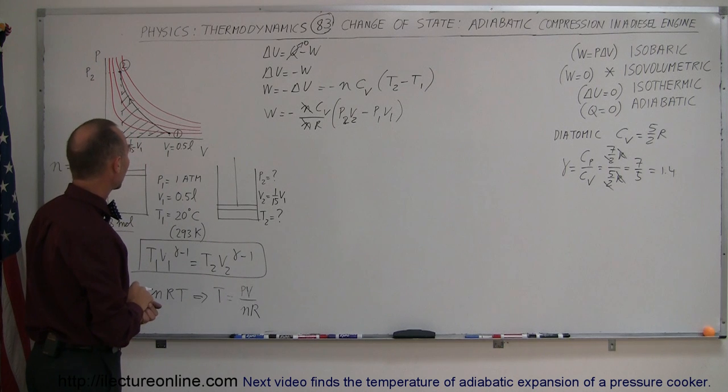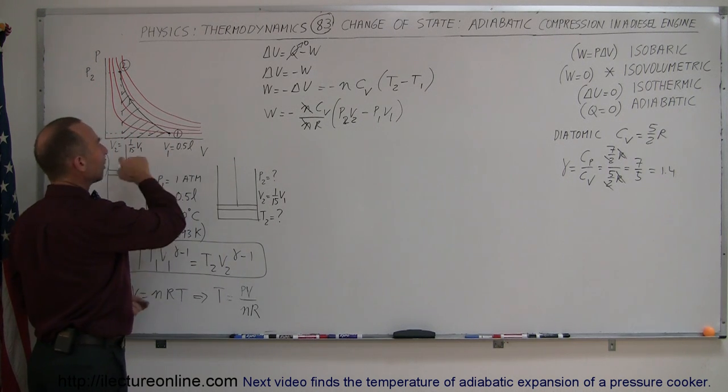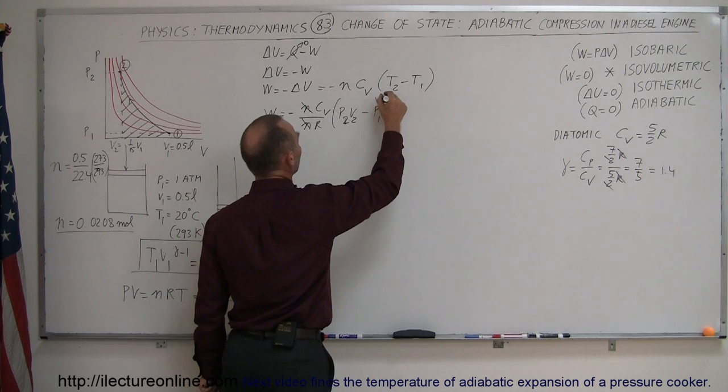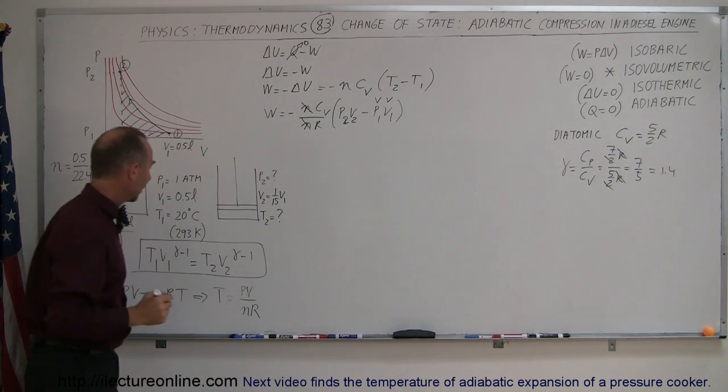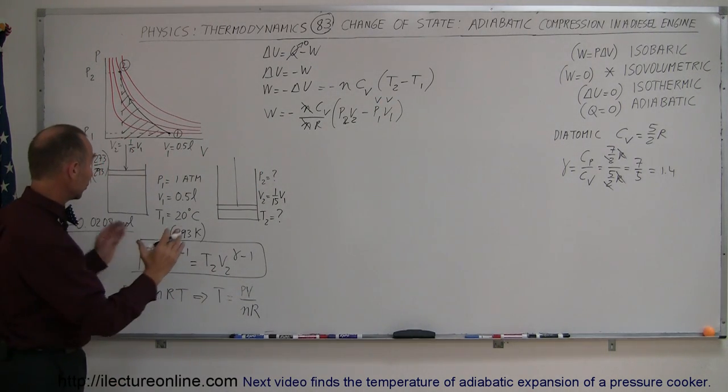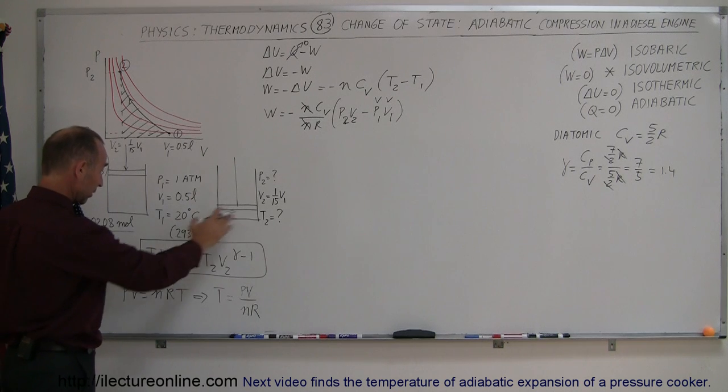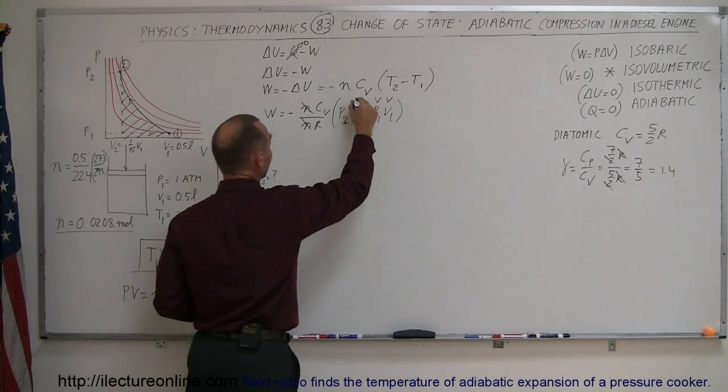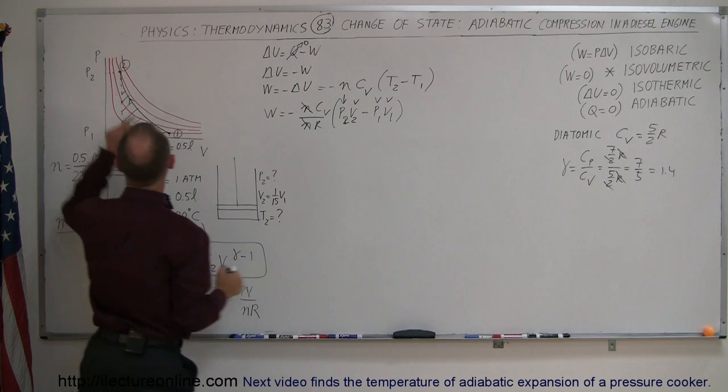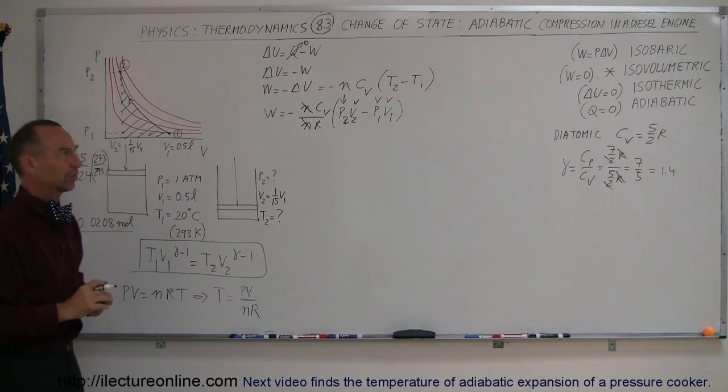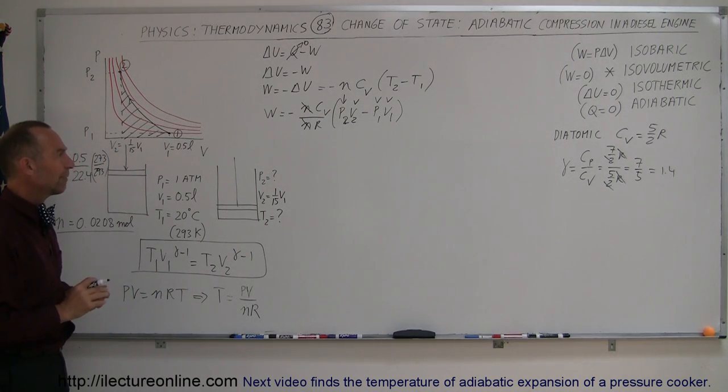We have the original volume and the original pressure, so those two are known. We have the final volume, because we know the final volume is 1/15th the original volume. The only thing we don't know is the pressure at the final state of the gas.